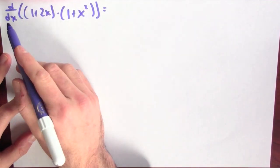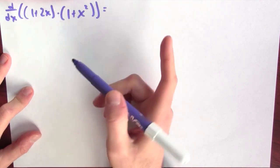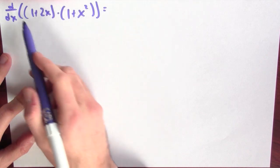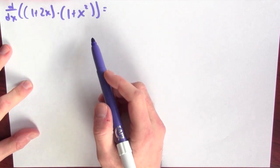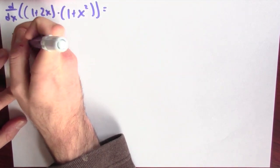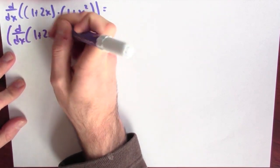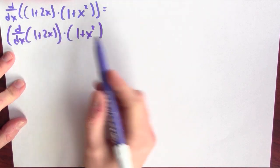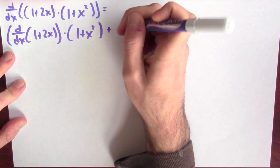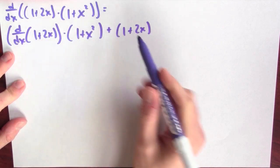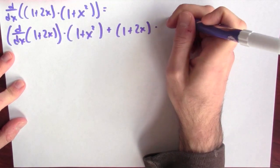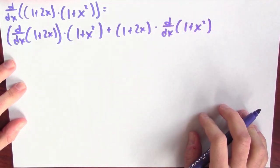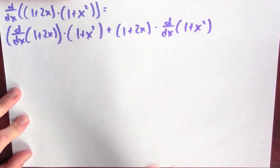This is the derivative of a product, so by the product rule, I'm going to differentiate the first thing, multiply it by the second, and add that to the first thing times the derivative of the second. So it's the derivative of the first term times the second term, plus the first function (1 + 2x) times the derivative of the second.